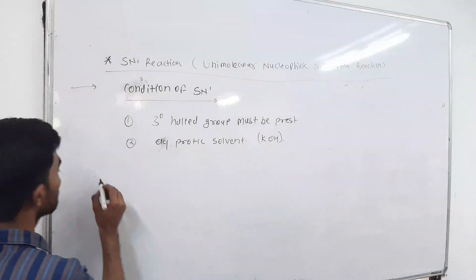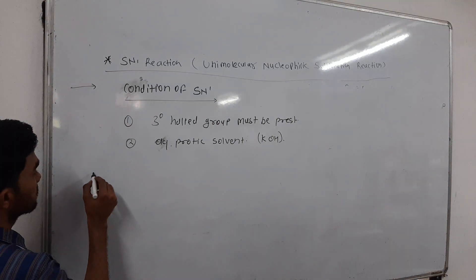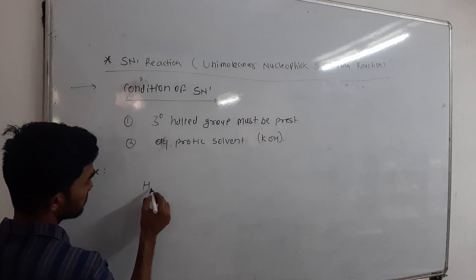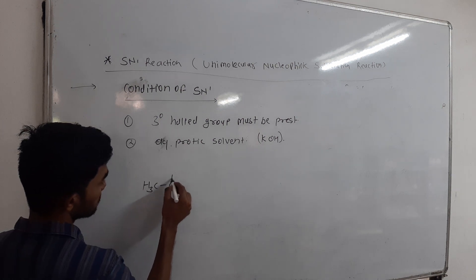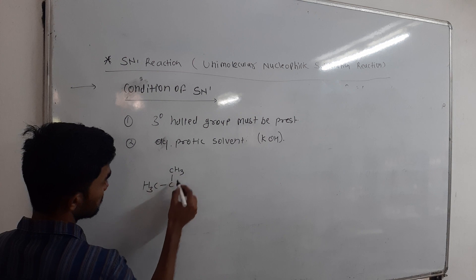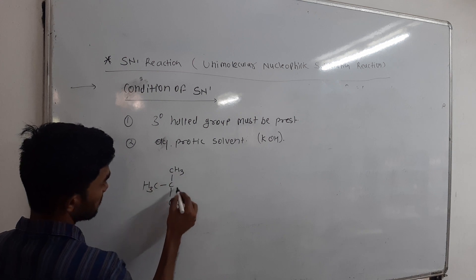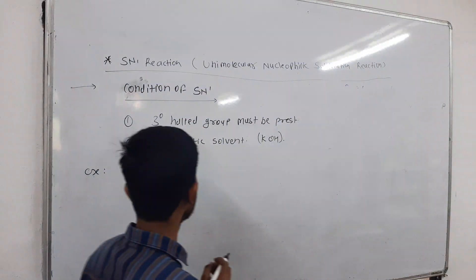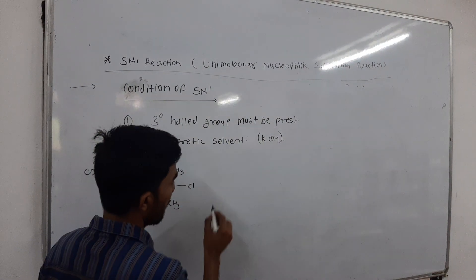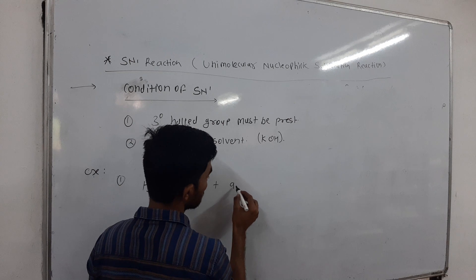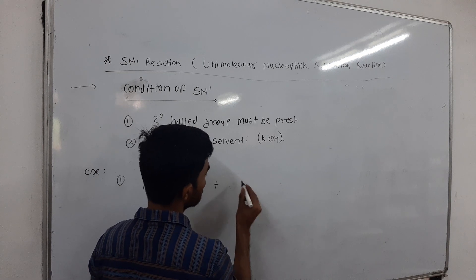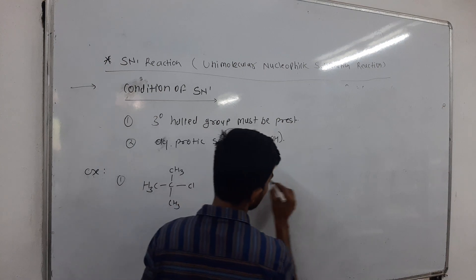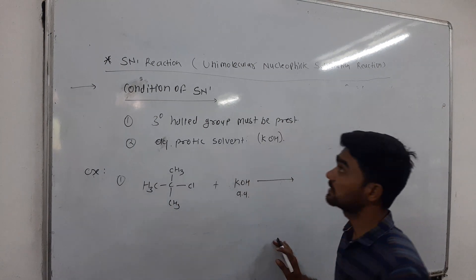The first example of this reaction is a tertiary halide — specifically a tertiary chloride — reacting with aqueous KOH. This is an SN1 reaction.